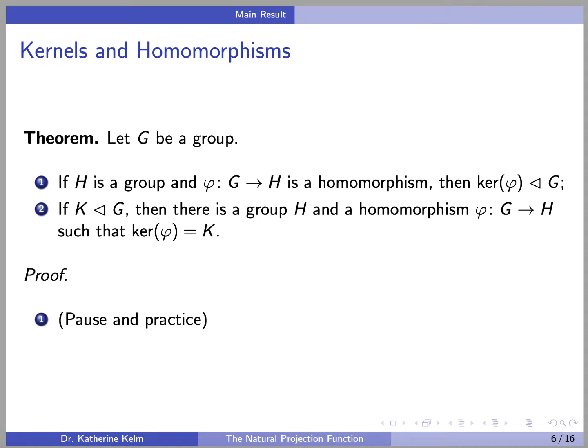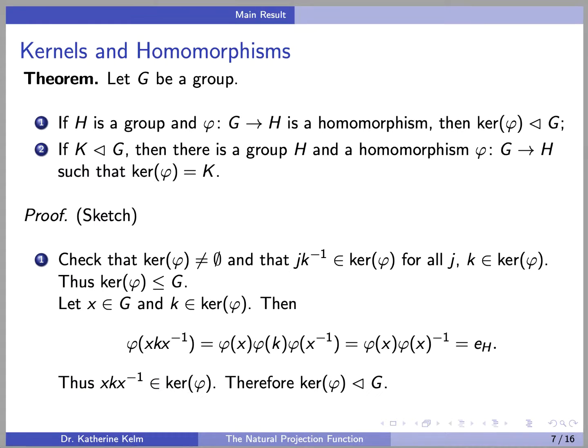It would be a good idea to pause and practice the proof of part 1 of this theorem. Here is a review of that proof. First, show that the kernel of phi is a subgroup of G. It's easy to check that the kernel is non-empty because the identity element is always in the kernel, and that any time you pick two elements J and K in the kernel, J times K-inverse is also in the kernel.